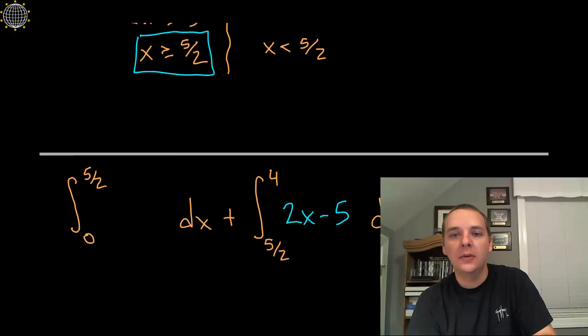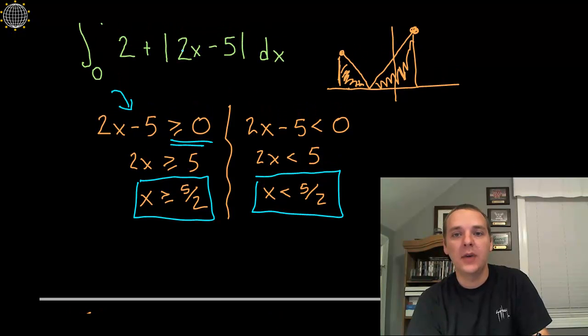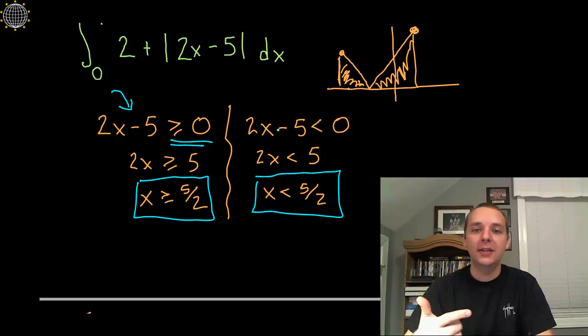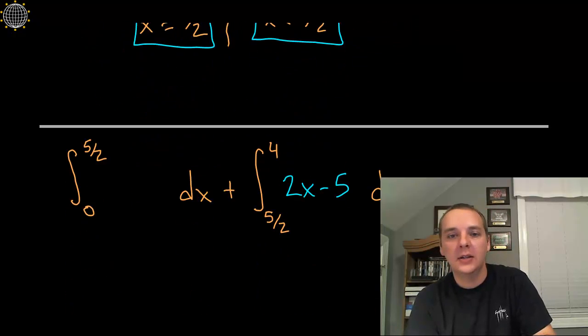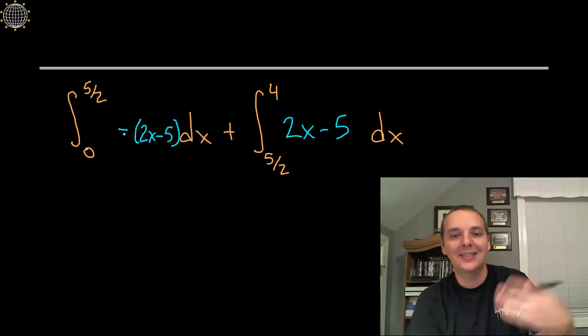But on the other hand, for the x's that are before 5 halves, the quantity inside the absolute values is negative, which means I'm going to have to change its sign by hand. So this guy over here for this interval would be negative the quantity 2x minus 5, so that the sign changes.